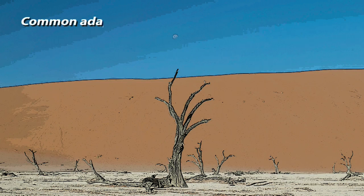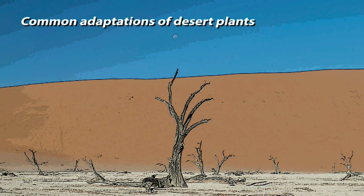The principal adaptive challenge faced by desert plants is, of course, scarcity of water. Green plants have responded to this challenge in various ways, some of them simple and others complex. These adaptations fall into several categories.